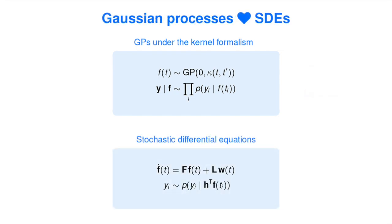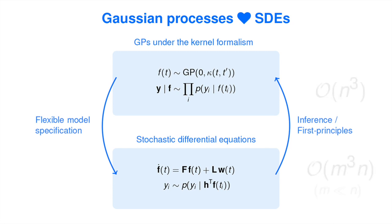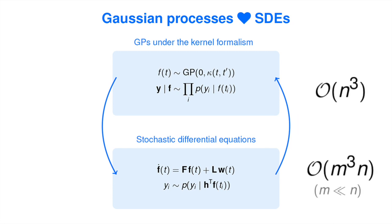By leveraging the connection to state-space models, a wide range of GP priors can be turned into an equivalent formulation in terms of stochastic differential equations. These state-space models can be solved by Kalman filtering in linear time complexity in the number of data points.